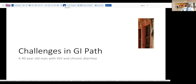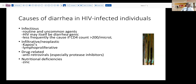In an immunocompromised or potentially immunocompromised patient, a couple of things come into consideration when they have diarrhea. These can include infectious diseases — the opportunistic sort that are sometimes routine and sometimes quite uncommon. But it's also possible that the HIV virus itself may be diarrheogenic. Patients less frequently have diarrhea in this situation if they're able to maintain their CD4 count over 200 per microliter. There are also various infiltrative and neoplastic disorders that can present at least in part with diarrhea, both Kaposi's sarcoma related to HHV-8 and some of the lymphoproliferative disorders that afflict HIV positive individuals.